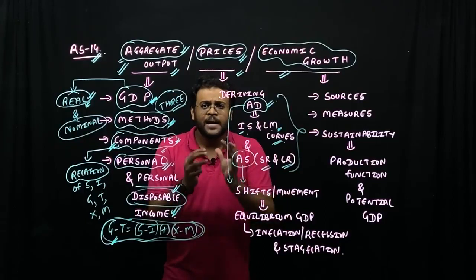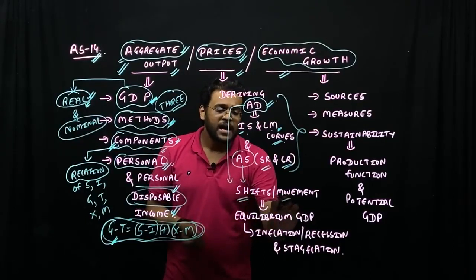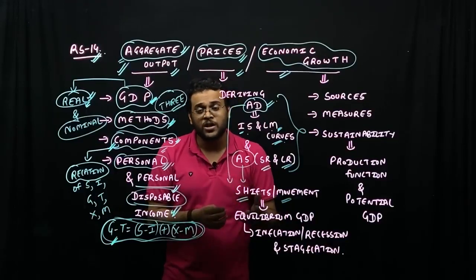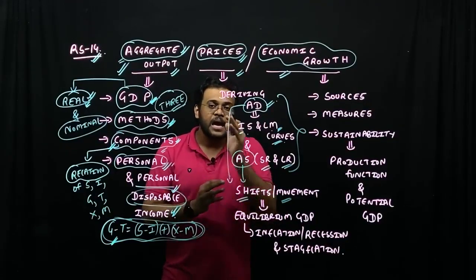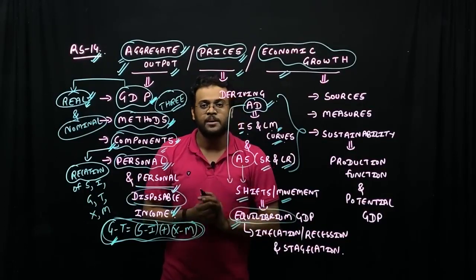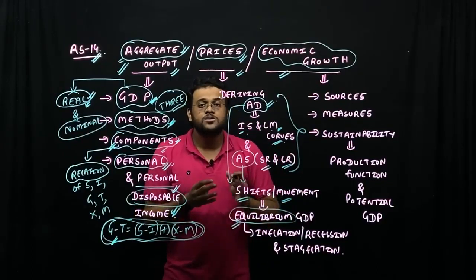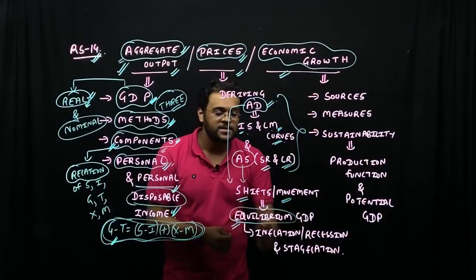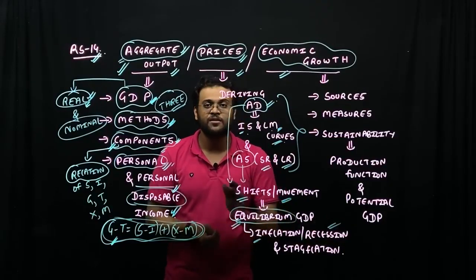Then combine them—the combined effect. If AS or AD shift, or AD or AS move, then what impact does it have? And how do AD and AS create inflation, deflation, recession?